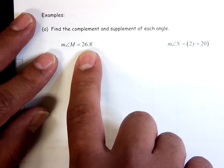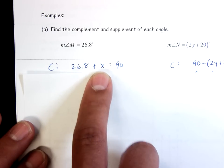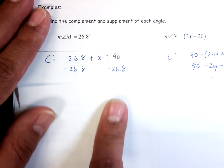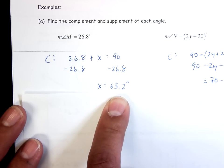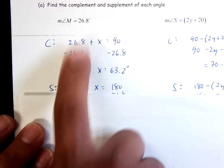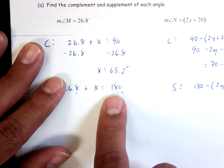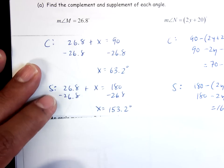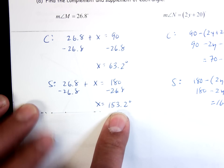So if this is the angle that I have — 26.8° — the complement: I take this angle, add it to the complement, and it's got to equal ninety degrees. I subtract 26.8 from both sides and x equals 63.2. So the complement of 26.8° is 63.2°. To find the supplement, I take 26.8 plus the supplement equals 180. Subtract 26.8 from both sides and I get x equals 153.2. So I just found the complement and the supplement of 26.8°.